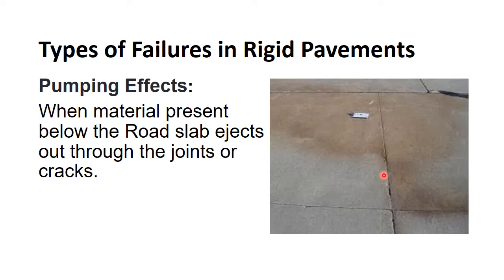Pumping occurs when there is void space between the slab and the underlying base or subgrade layer. The remedies are that subgrade drainage should be improved, and fog seal or slurry seal may be applied to limit water infiltration.